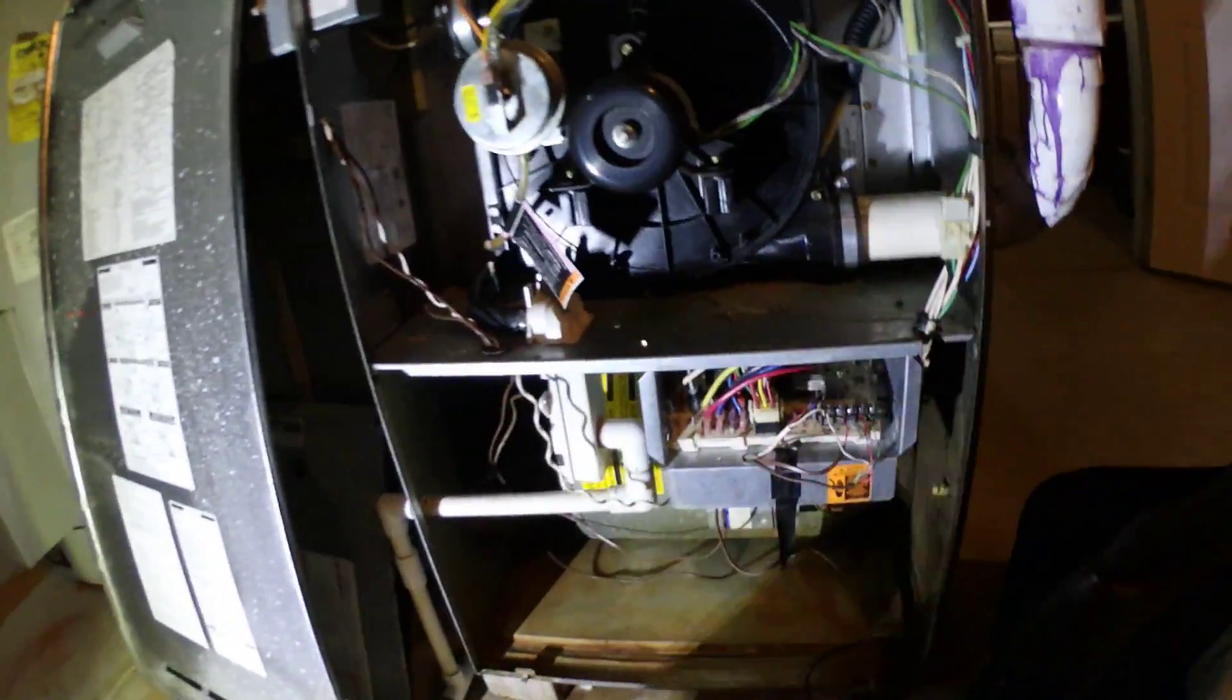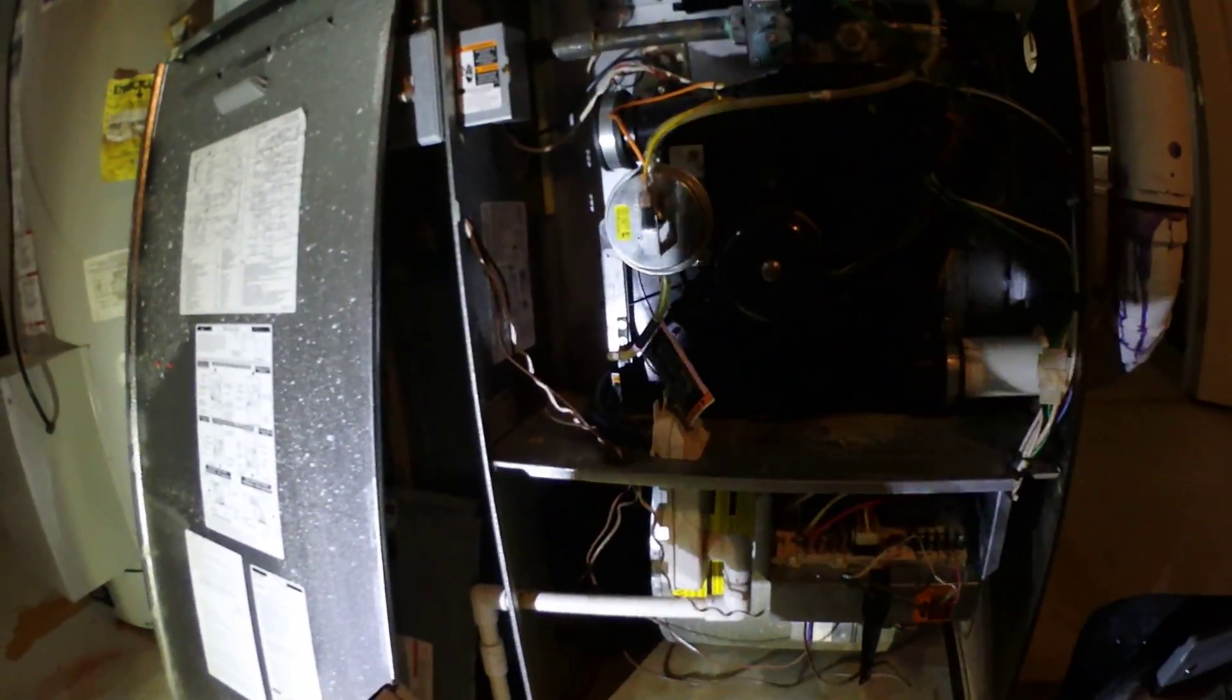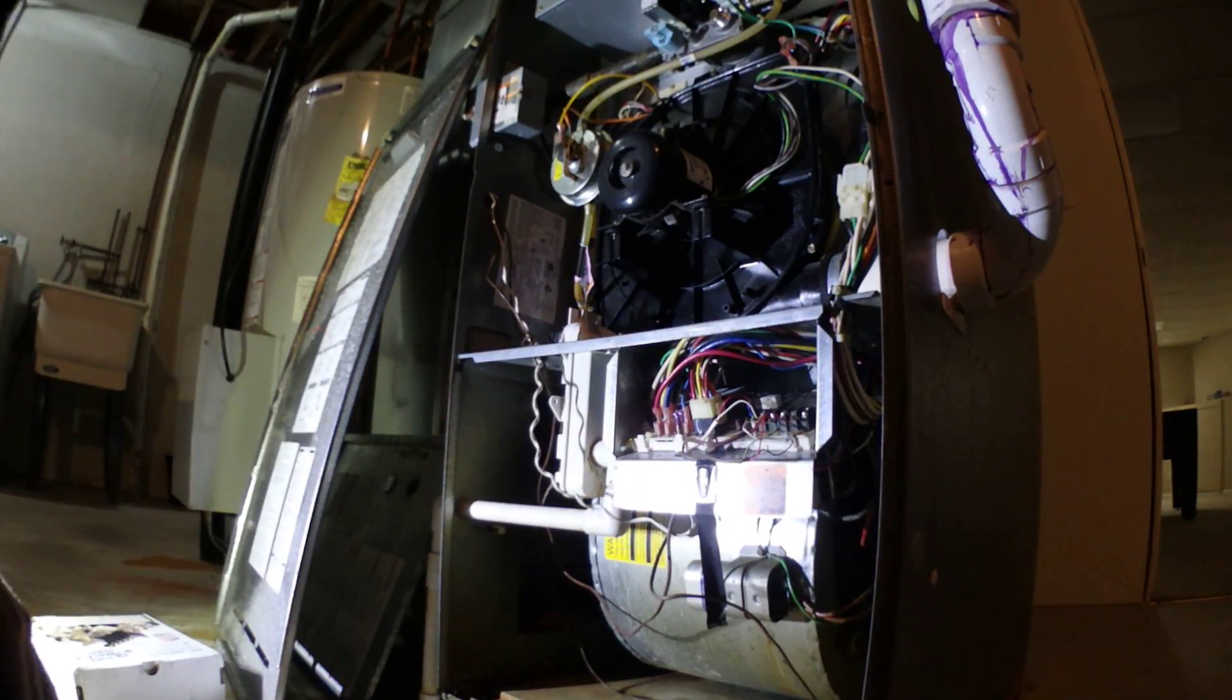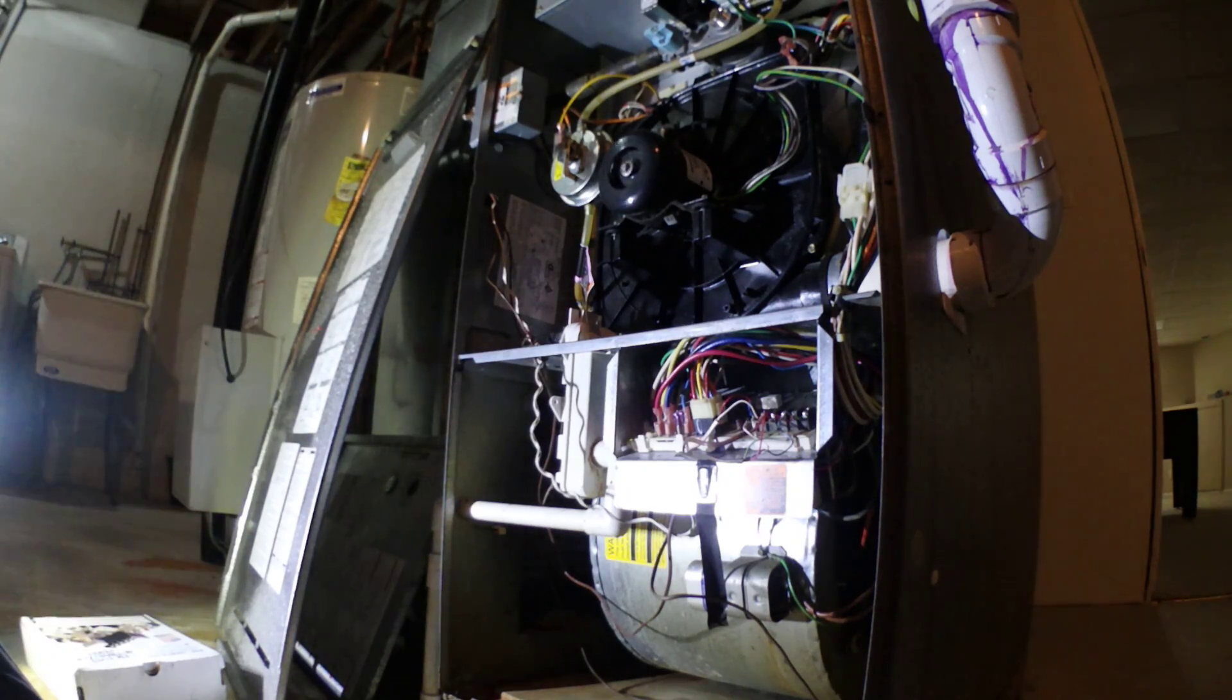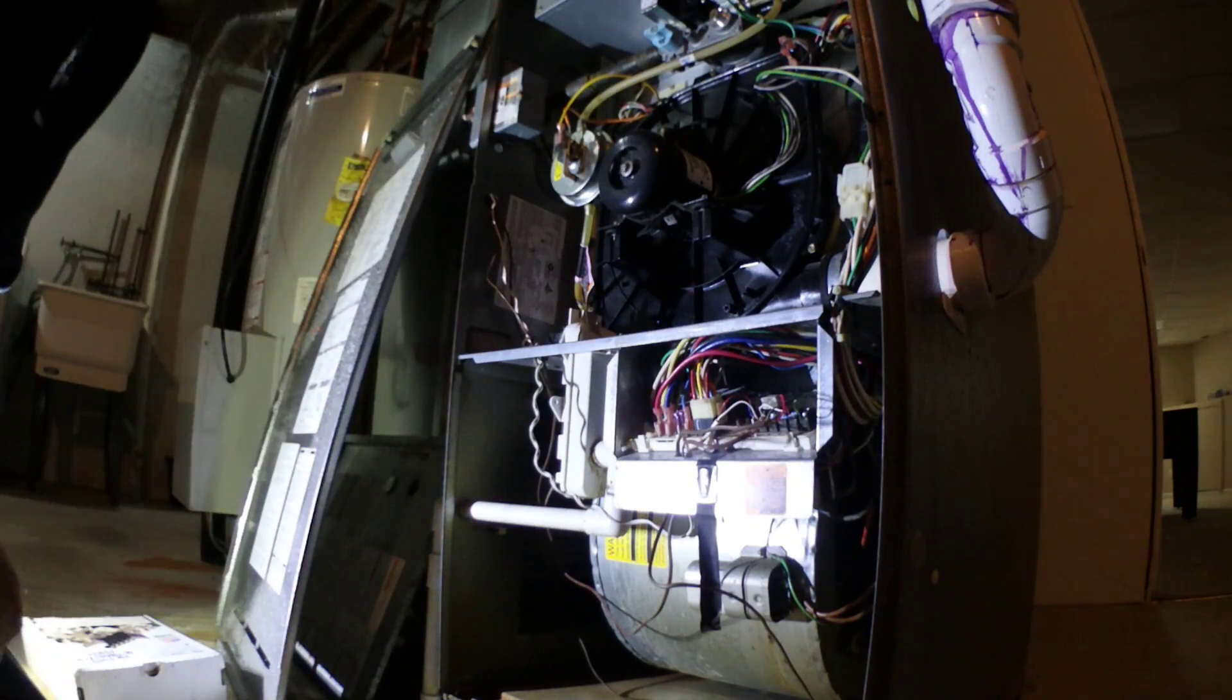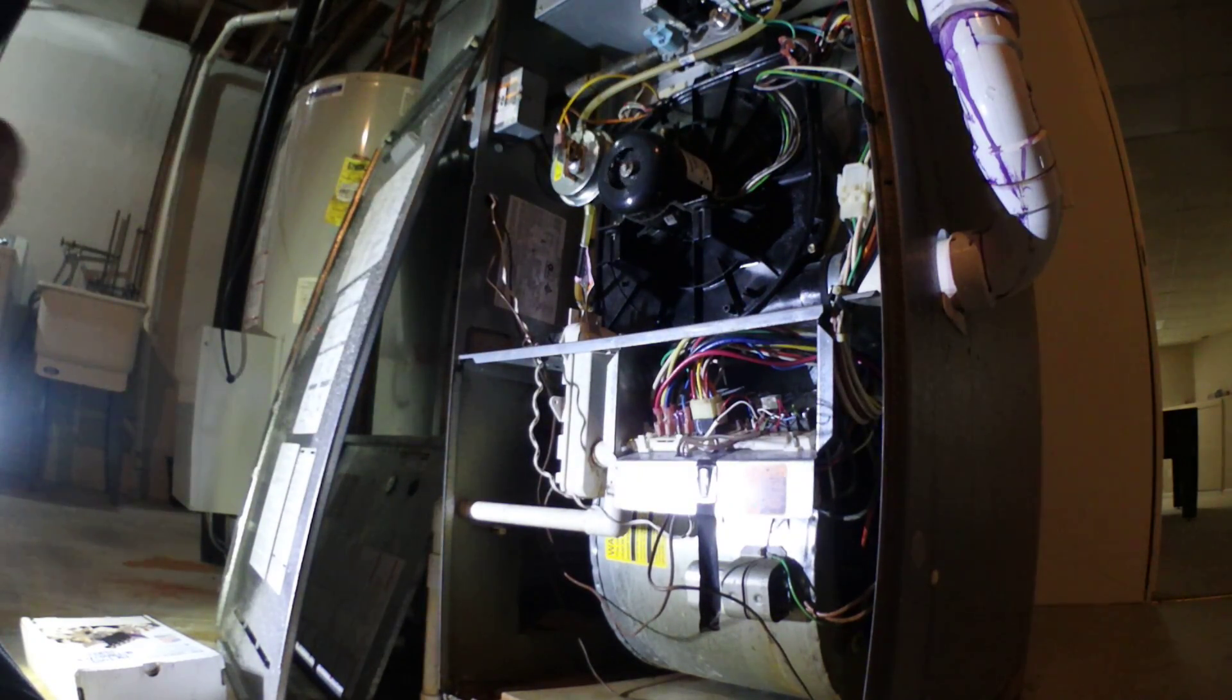It was also throwing some weird codes, so what we're going to do - that's the original board on there - we're going to put that board on there that replaces that control. It's a retrofit kit. Let me prop you up here so we got a humidifier. Pretty simple stuff, got the power switch off.